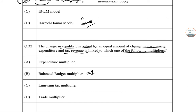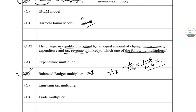BBM is the Balanced Budget Multiplier. As a result of that, change in government expenditure gives us 1/(1−b), and tax revenue gives us −b/(1−b). Taking them together, it comes to 1. So we are talking about the Balanced Budget Multiplier here.